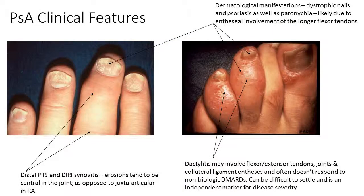From a podiatry clinical viewpoint, you may be the first to see this condition, the first to notice symptoms, or you may be integral in managing disease already diagnosed. Clinical features include distal PIPJ and DIPJ synovitis — in contrast to rheumatoid arthritis where these joints are largely spared, psoriatic arthritis does tend to affect the more distal smaller joints. Dactylitis is a key feature that may involve the flexor or extensor tendons, joints, and collateral ligament entheses, and often doesn't respond to non-biologic DMARD therapy.